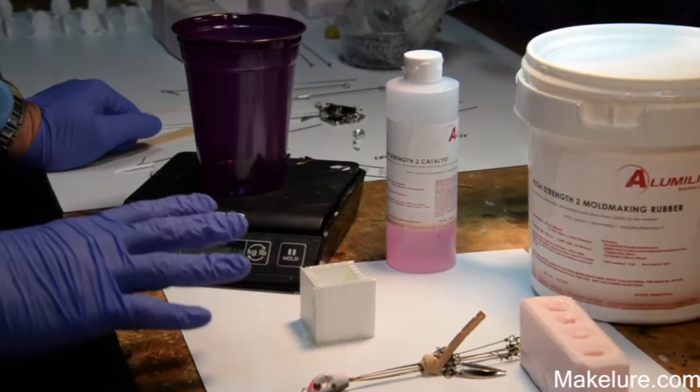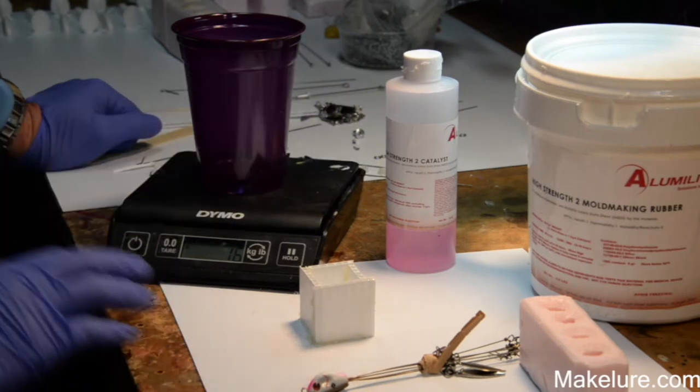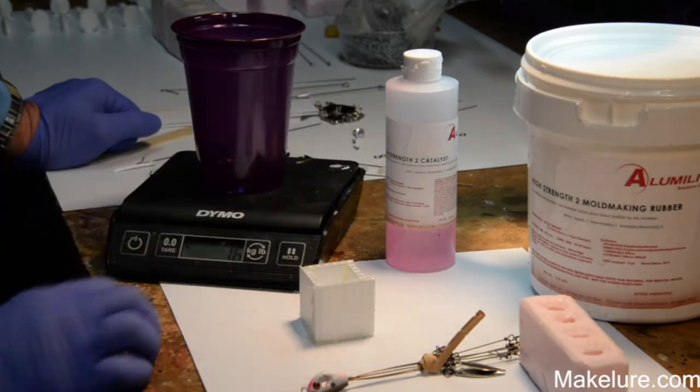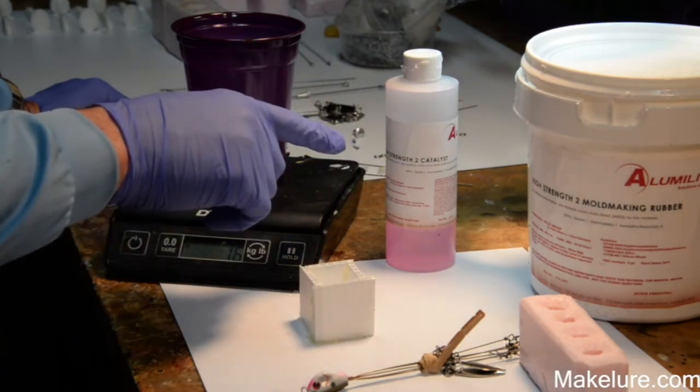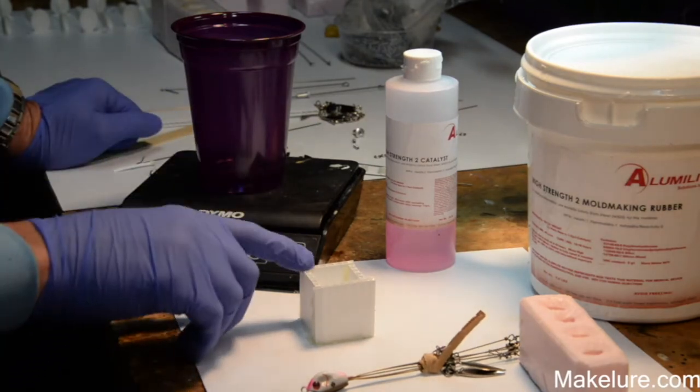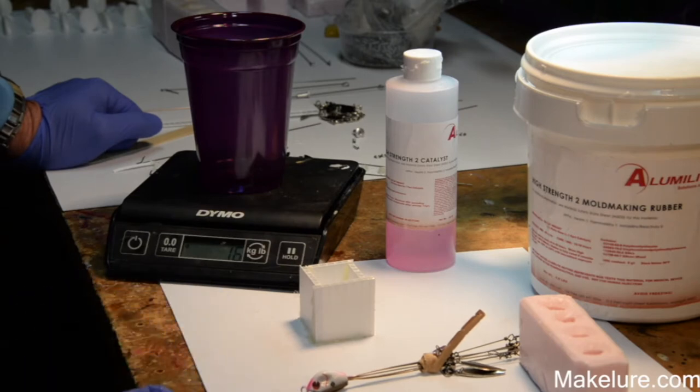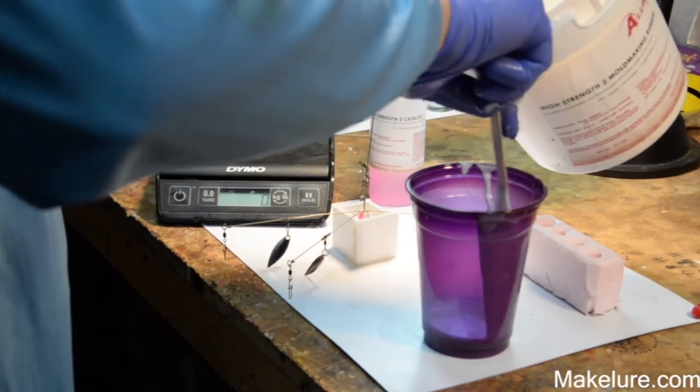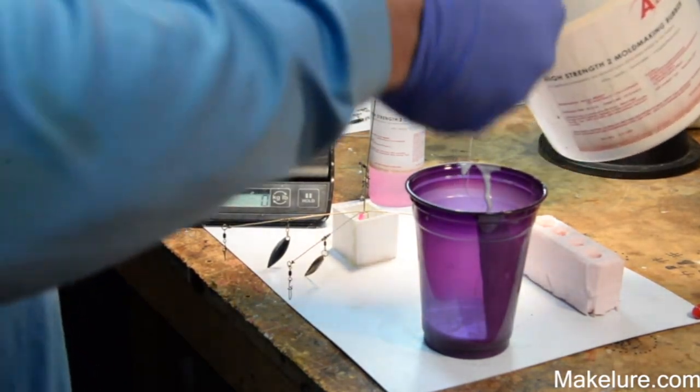So we're getting ready to mix up our high strength two. This is a 10 to 1 ratio and you really do need a set of scales to do it right, but we're going to pour just a very little bit of high strength two in here and then the agent that activates it. Once we mix it up really well, we're going to pour it in here and suspend this head and again it'll be ready tomorrow. This stuff is unbelievable.